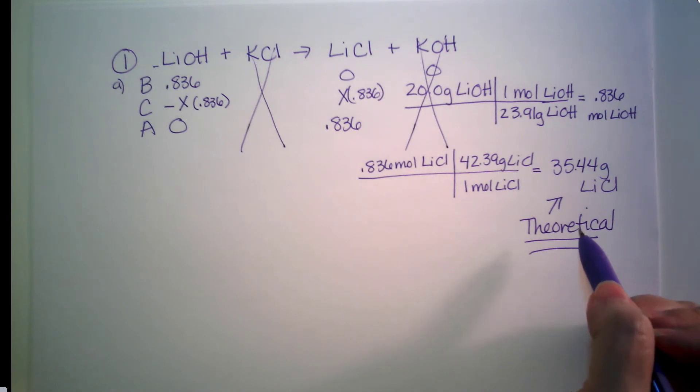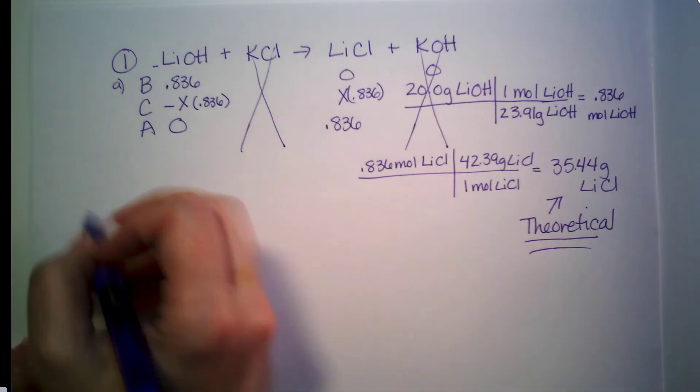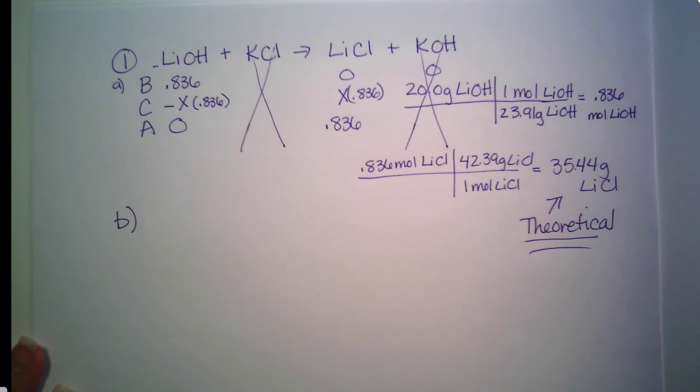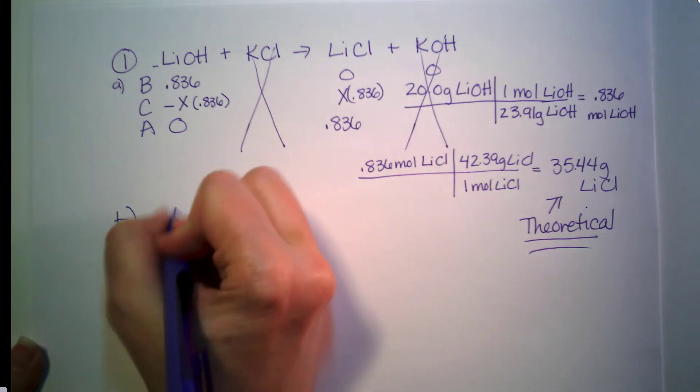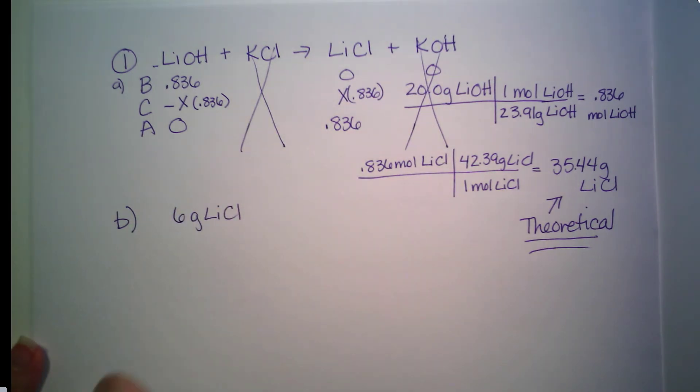But in reality, I did not. So if I look back at the problem, it tells me that for part B, it tells me I actually produced six grams of lithium chloride. I don't know about you, but that sounds pretty bad. So if I've got six grams of lithium chloride, it's how much I actually made.